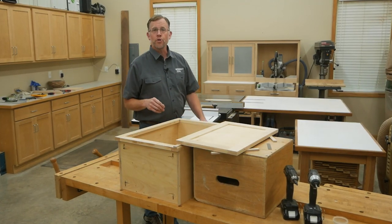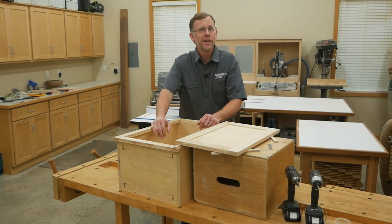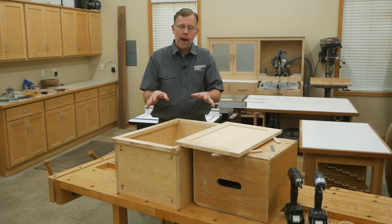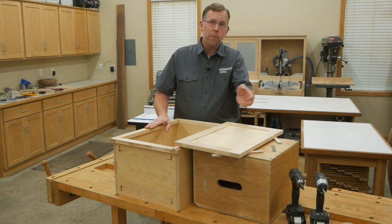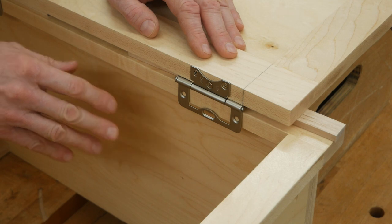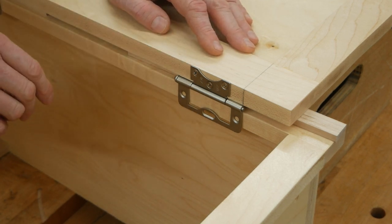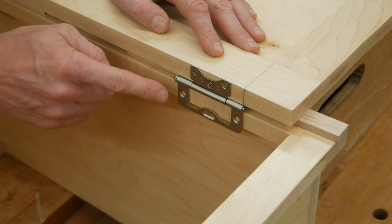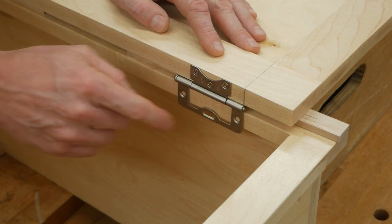We're ready to attach the larger hinge leaves to the face frame to hang the door. So once again, I've got my cabinet laying on its back, and the door propped up on a box with some spacers so I can work on it more easily. If you look closely here, these flat leaf no-mortise hinges are less forgiving than the wrap-around style because these screw holes aren't slotted this time. I can't adjust them.